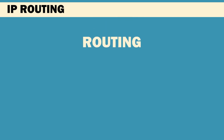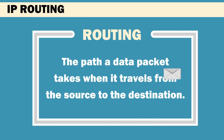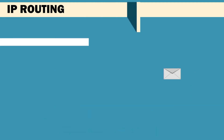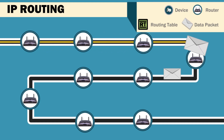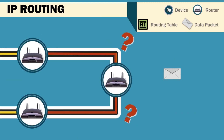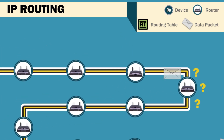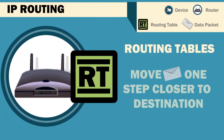In a network, routing is the path a data packet takes when it travels from the source to the destination. Along the way, it travels from router to router. Each one works independently to move the packet one step further along the route. No router knows the full path to the destination. They don't know where the packet was three steps before arriving or where it will be two steps after leaving. The router's job is to use its routing tables to move the packet one step closer to its destination.